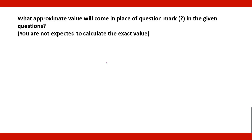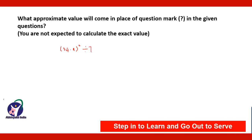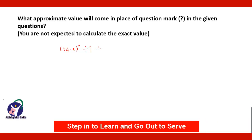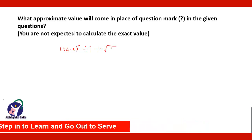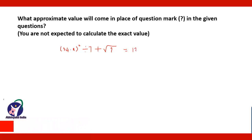You are not expected to calculate the exact value. Here is the first question: 34.9 bracket squared, divided by 7, plus the square root of the question mark, is equal to 217.02.